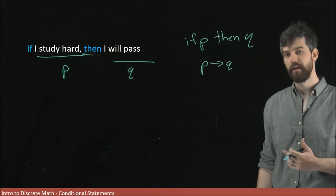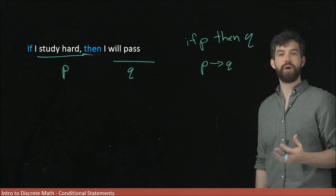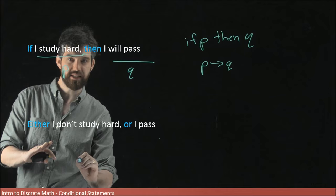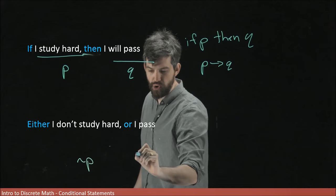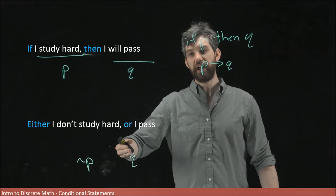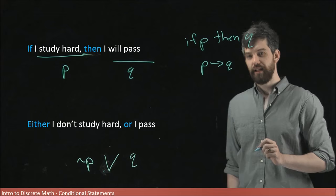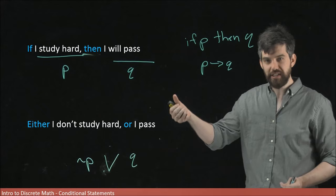A logical implication is the same as not P or Q. Written out in English: 'either I don't study hard, or I will pass.' Here, 'I don't study hard' corresponds to not P, and 'I will pass' corresponds to Q, connected by the disjunction (or). These two statements are logically equivalent: 'if I study hard then I will pass' sets up that either I pass, or I don't study hard.